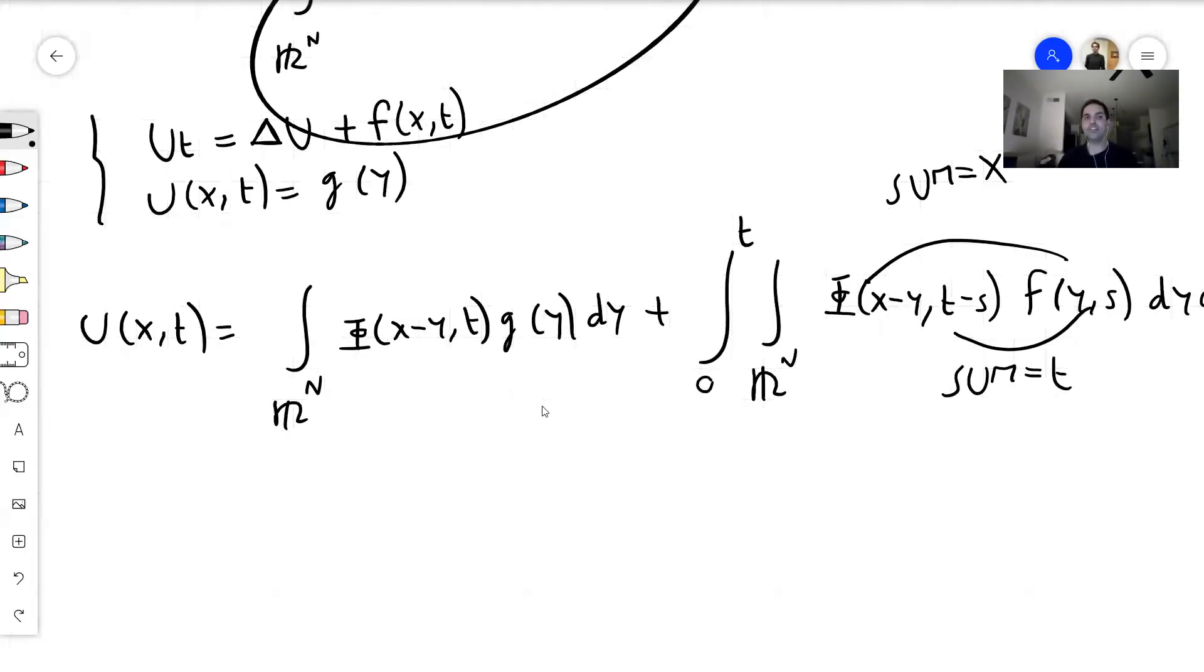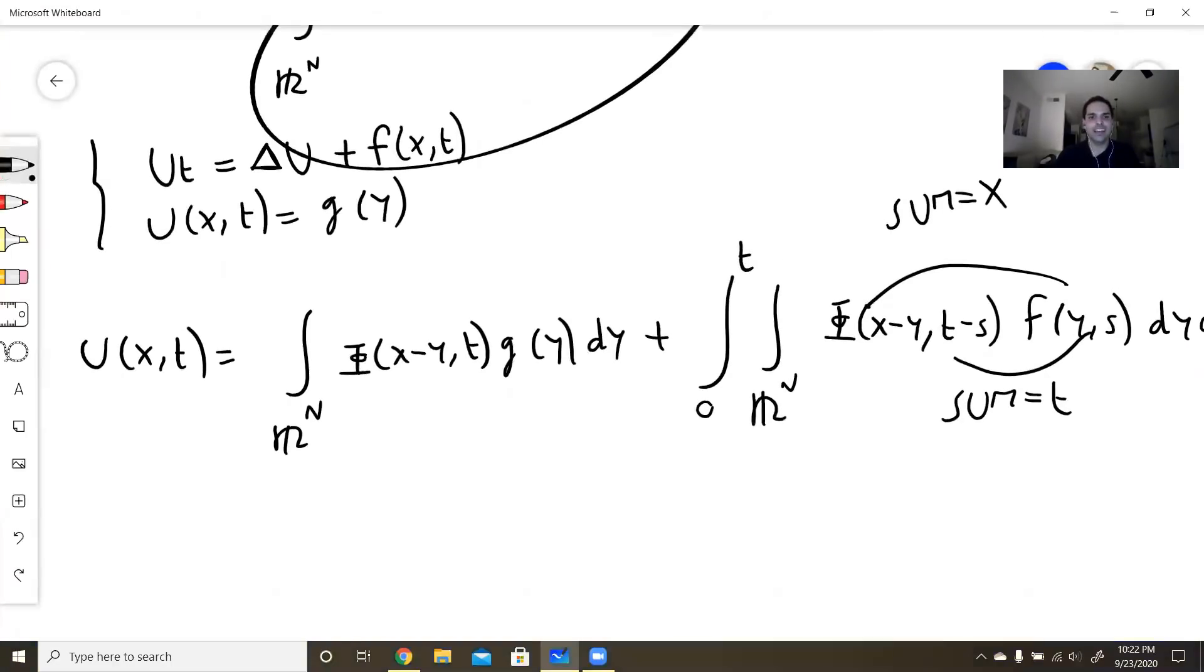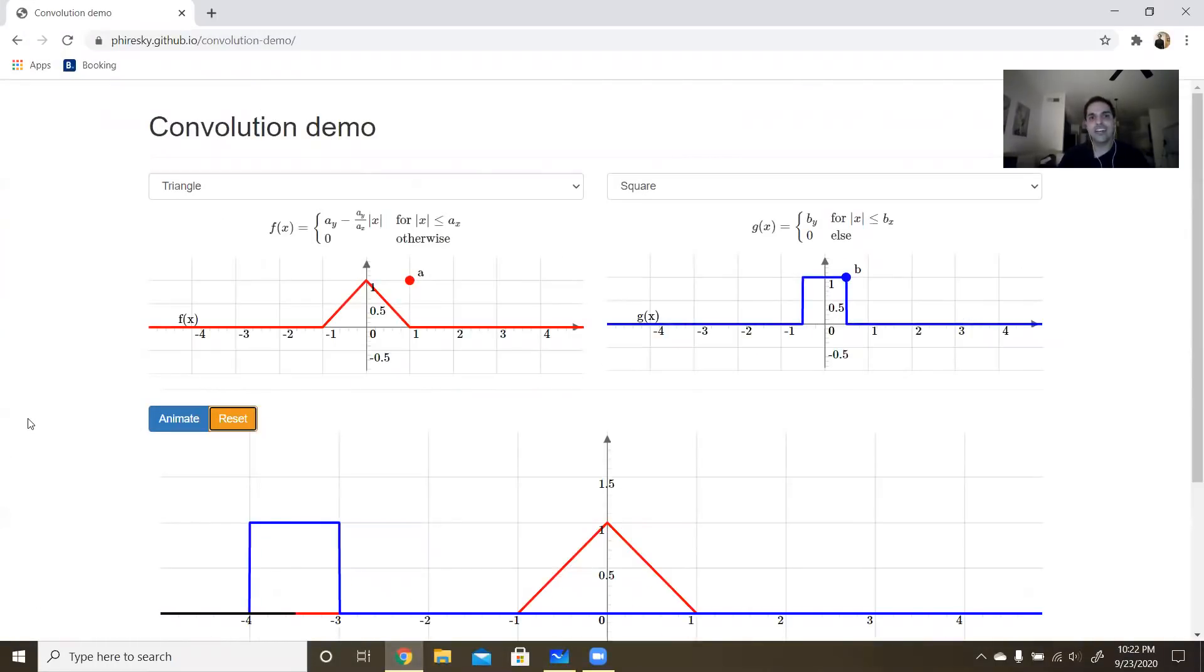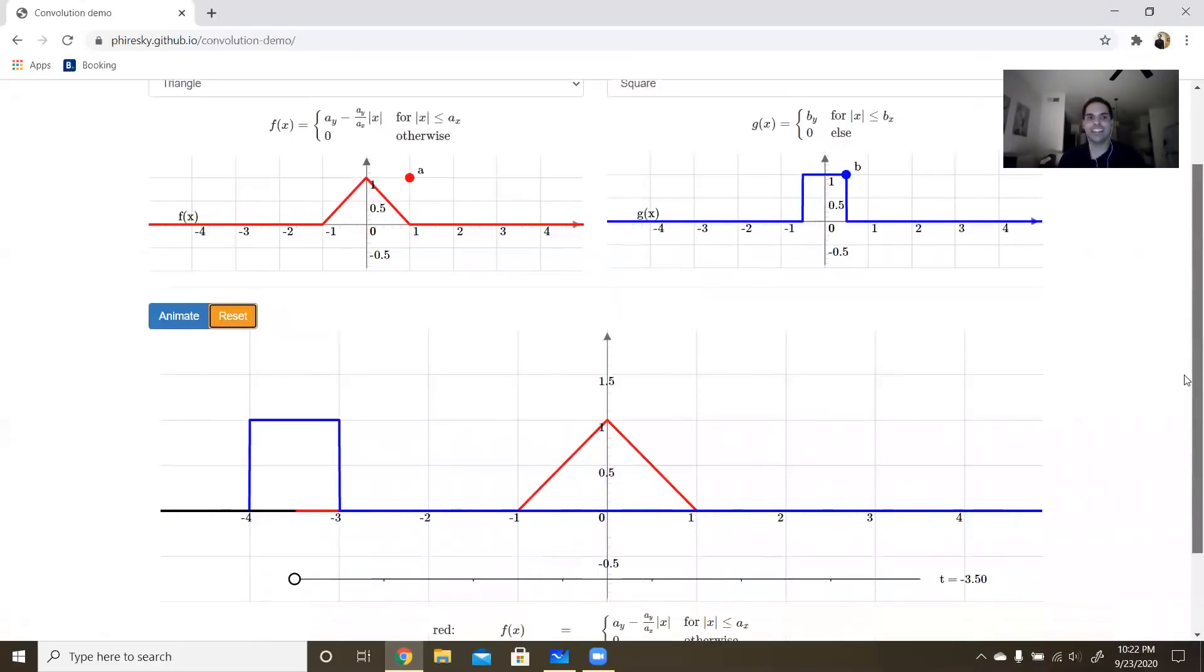And last but not least, I do want to show you a really cool demo I found, in case you want to know more about what convolution looks like. So again, this is the one I found. Hopefully you can see this. But here we have the triangle, the plucked string function for the wave equation. And here we have just the indicator function like before. And the question is, what does this look like at the end?